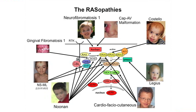The RASopathies include: neurofibromatosis type 1, Noonan syndrome, Noonan syndrome with multiple lentigines (formerly called Leopard syndrome), gingival fibromatosis type 1, capillary malformation-AV malformation, Costello syndrome, cardiofaciocutaneous syndrome (CFC syndrome), and Legius syndrome — the new syndrome on the block. Legius syndrome used to be called NF1-like, and it was identified based on the pathogenetics of the pathway.